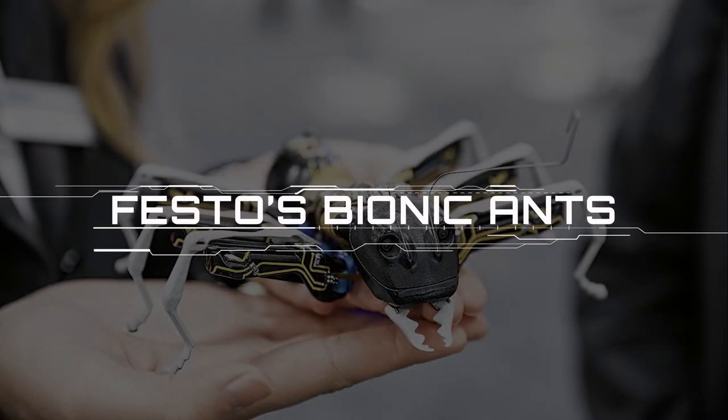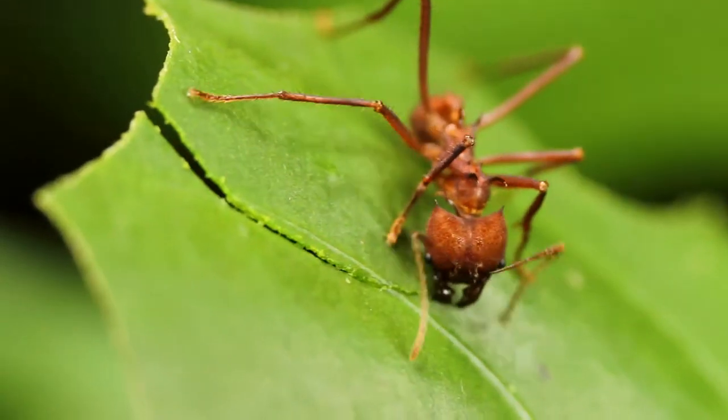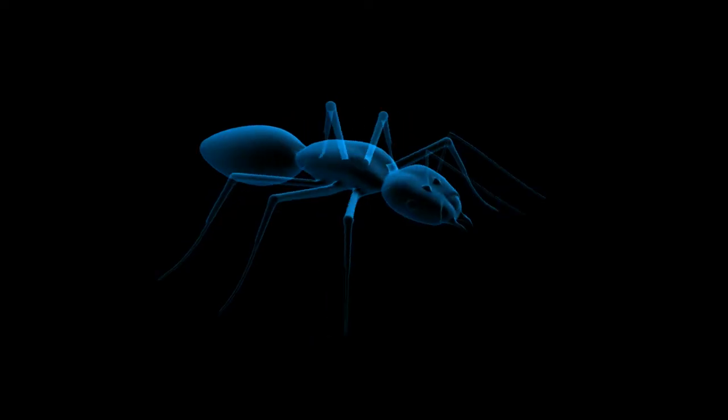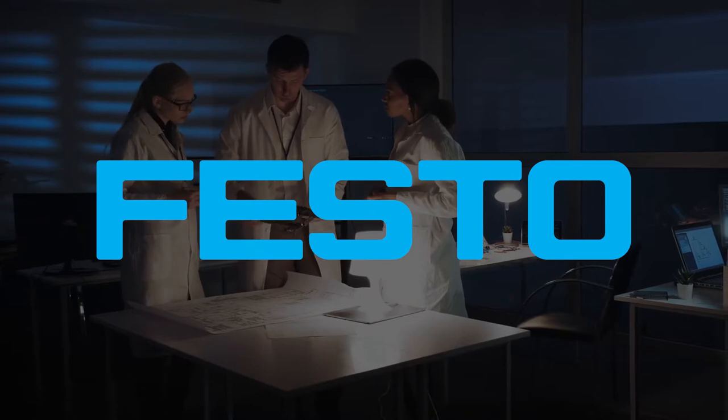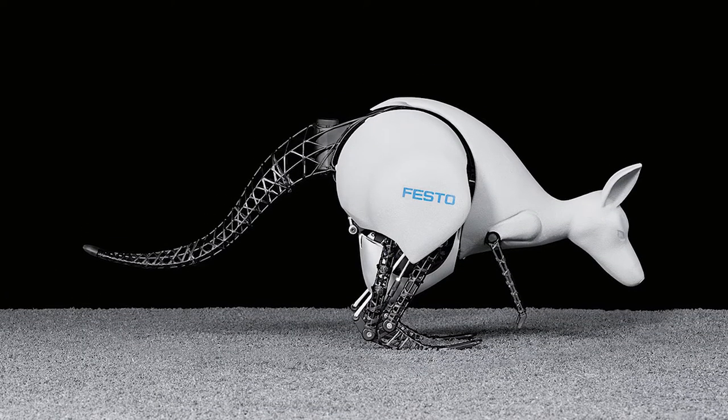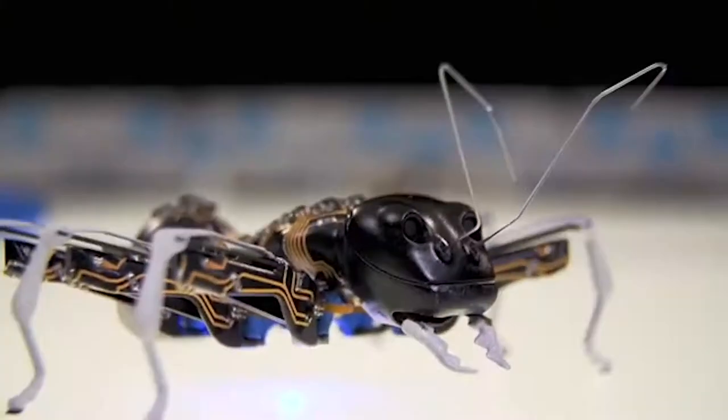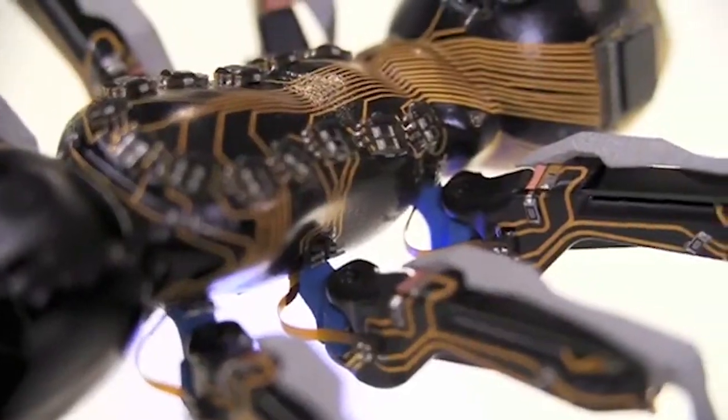Festo's Bionic Ants. Designing a robot that can move and act like a real animal is a much more difficult prospect than merely building something that looks like one. Some of the best examples have come from the engineers at Festo, including a herring gull named Smart Bird and a bit of a bounder known as the Bionic Kangaroo. Festo, a German automation company, has invented Bionic Ants as part of the Bionic Learning Network.